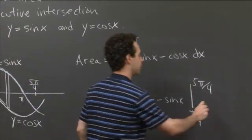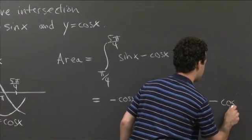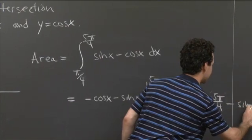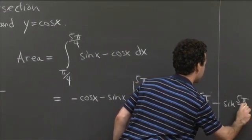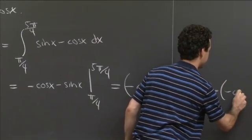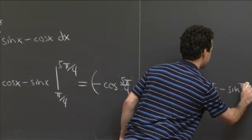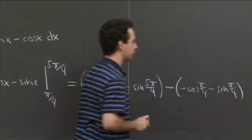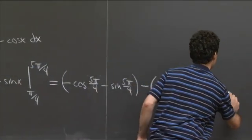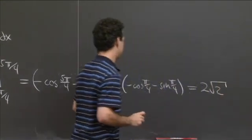And now we just have to plug in the values. So this is equal to minus cosine 5π over 4 minus sine 5π over 4 minus the quantity minus cosine π over 4 minus sine π over 4. And I'm sure you can work out for yourself that this is equal to 2 times the square root of 2, if I haven't botched anything terribly.